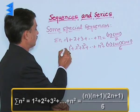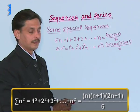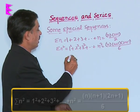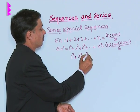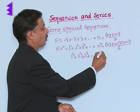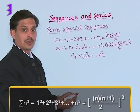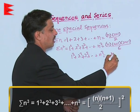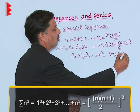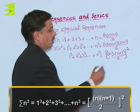And similarly, 1 cube, 2 cube, 3 cube, up to n cube. Sum of cubes of first n natural numbers is given by the formula n into n plus 1 upon 2 whole square.